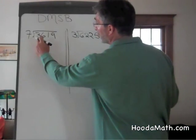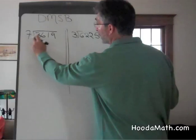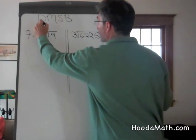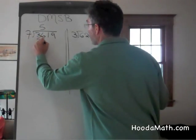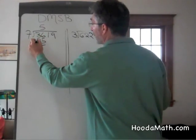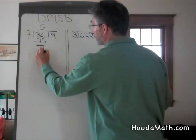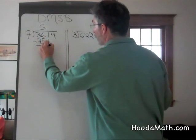7 is not a factor of 3, but 7 is a factor of 36. 5 times 7 is 35. Multiply. Now we subtract and bring down the 1.